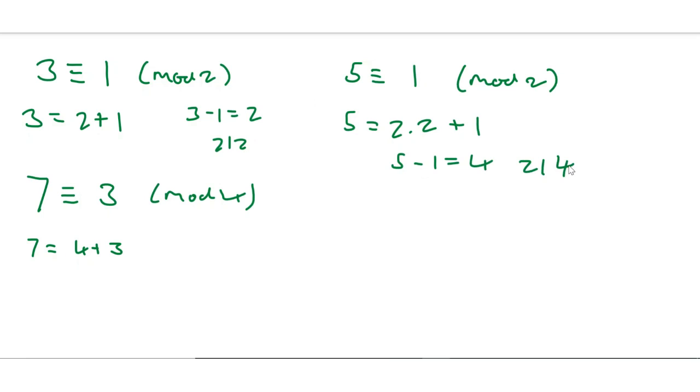And here 7 minus 3 equals 4, and again 4 clearly divides 4. But now I want to say, is the one we pick unique? Do we have to pick 3? The answer is no.